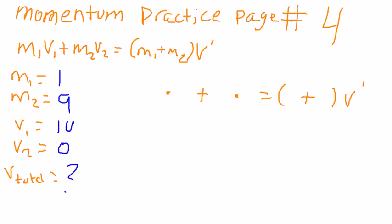Now we plug in our givens. 1 mass of the first one and the velocity of the first one are multiplied together, adding the second mass, which is 9, multiplying by 0, the second velocity. And then we have M1 plus M2, which is 1 plus 9, times V.